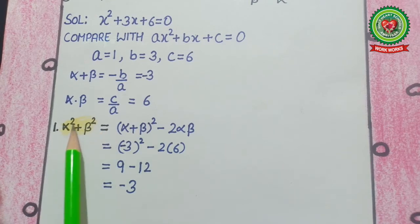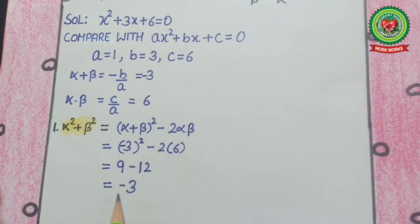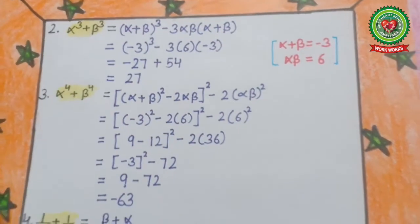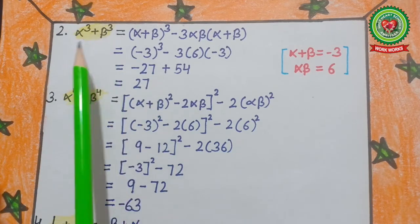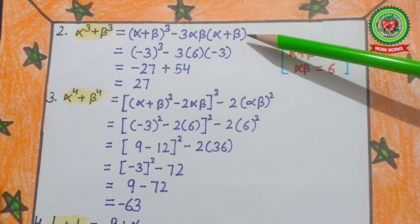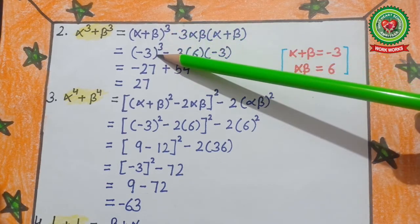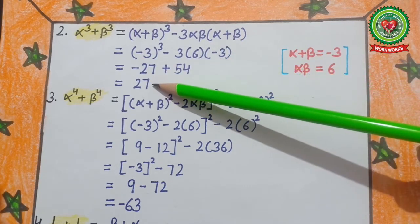First question: α²+β². Its formula is (α+β)²−2αβ. Filling in the values gives the answer −3. Second question: α³+β³. Its formula is (α+β)³−3αβ(α+β). After filling in the values of α+β and αβ, our answer is +27.